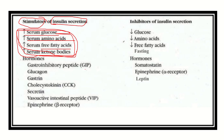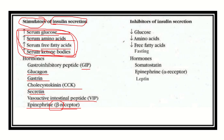Other hormones that stimulate insulin secretion include GIP (gastro-inhibitory peptide), glucagon, gastrin, cholecystokinin, secretin, vasoactive intestinal peptide, and epinephrine — but epinephrine only through beta receptors, not other receptors.